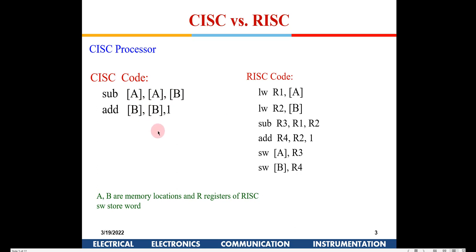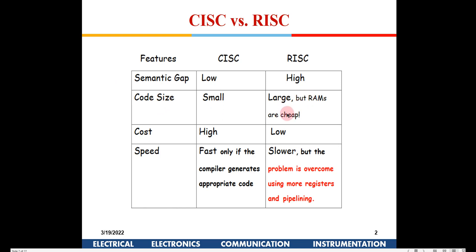In RISC code, you first need to load the contents of memory locations into registers, then give a subtract command. The result is stored via a store command. For the same two CISC instructions, the RISC equivalent requires six lines of code — load, load, subtract, add immediate, store, store. This confirms that CISC code size is small while RISC code size is larger.